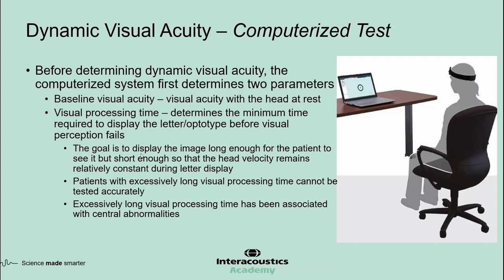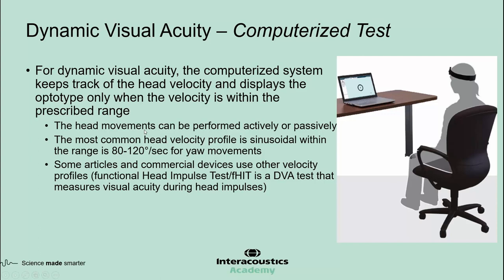Patients with excessively long visual processing time cannot be tested accurately. These types of excessively long visual processing times can be associated with central processing abnormalities — for example, you can see that in patients after a concussion. For dynamic visual acuity, the computerized system keeps track of the head velocity and displays the optotype only when the velocity is within the prescribed range.